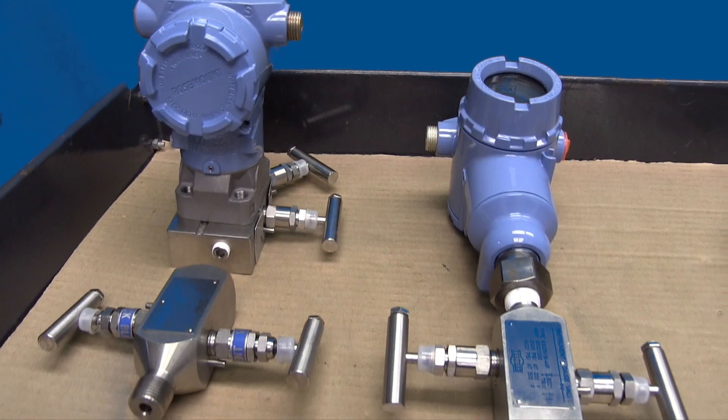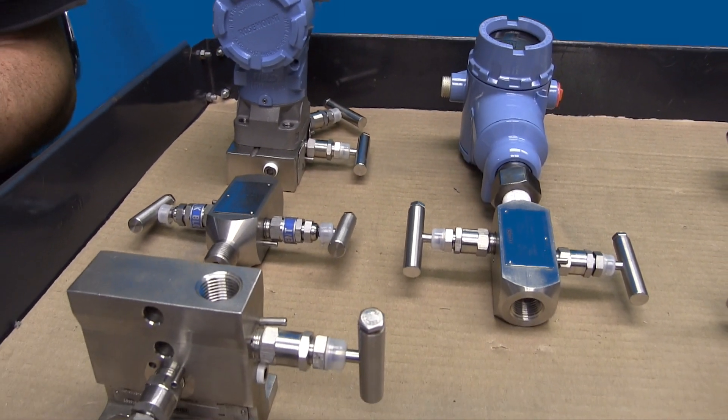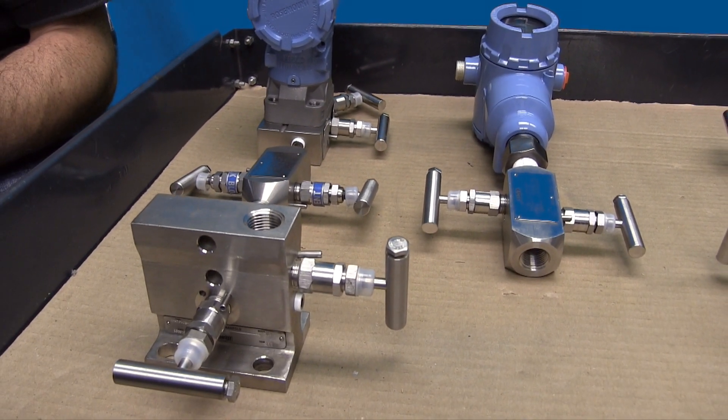Two-valve manifolds are usually used on gauge pressure transmitters where there is a need to isolate the transmitter and vent the pressure off.